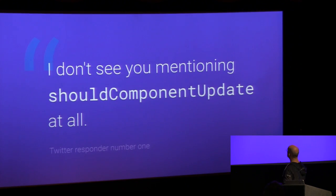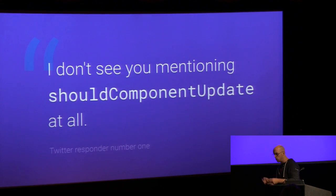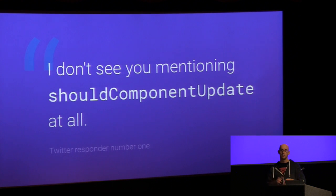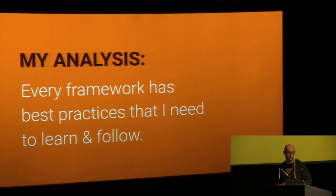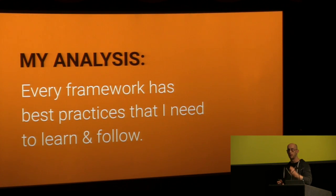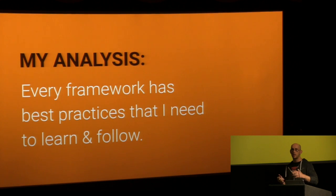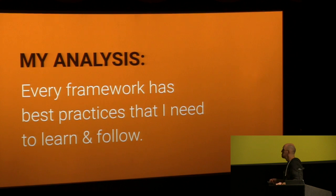Somebody said: 'I don't see you mentioning shouldComponentUpdate at all.' If you haven't done React work, this is the way you lock off parts of the tree so a component shouldn't update — which is the thing I was invalidating by changing the whole tree every time. My analysis is that every framework ends up having best practices you have to absorb. We call it idiomatic. It's just a different set of problems. But you're not getting away for free — if the framework says 'it's all free, forget about it,' alarm bells should go off.